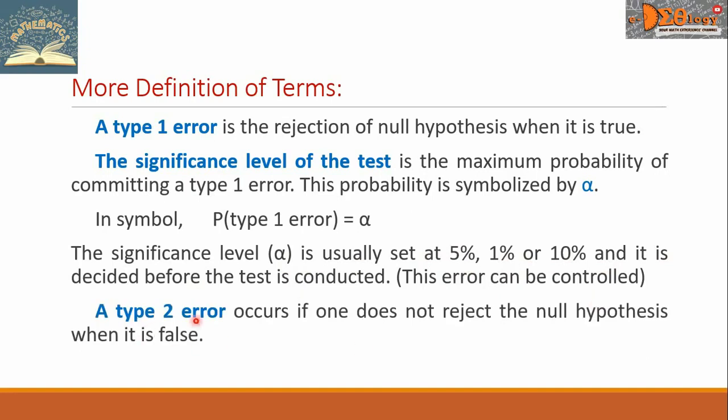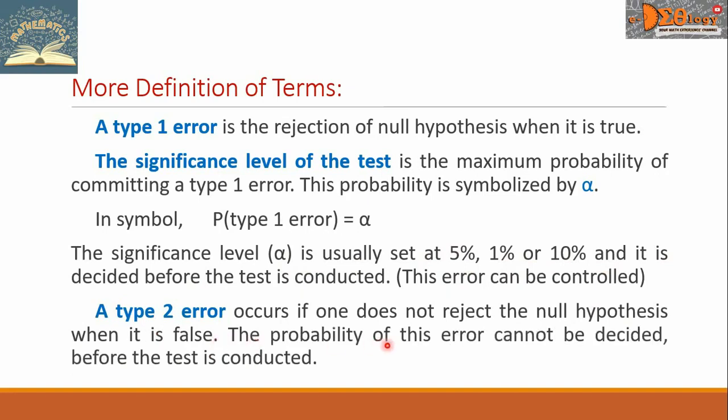A type 2 error occurs if one does not reject the Null Hypothesis when it is false. The probability of this error cannot be decided before the test is conducted.